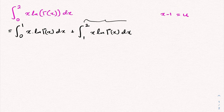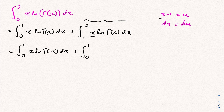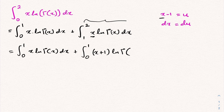Differentiating gives dx equal to du. Now I rewrite: the first integral from 0 to 1 of x ln Gamma(x) dx, plus the transformed integral. Changing boundaries: when x approaches 1, u approaches 0; when x approaches 2, u approaches 1. Since x equals u plus 1, we substitute x plus 1, and du converts back to dx.